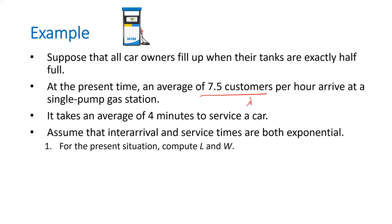At the present time, an average of 7.5 customers per hour arrive at a single pump gas station. That's your lambda. And it takes an average of 4 minutes, so 60 over 4 is going to be your mu. Assume that interarrival and service times are exponential.